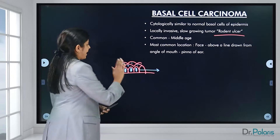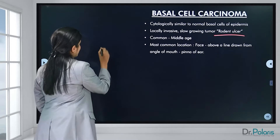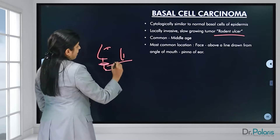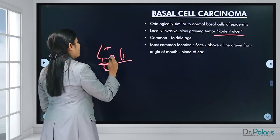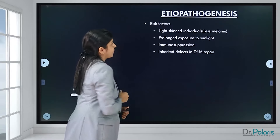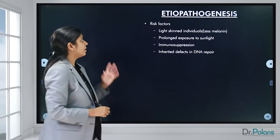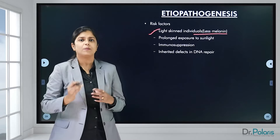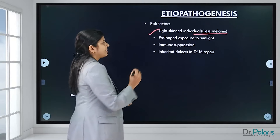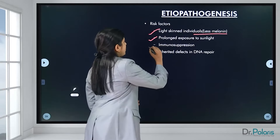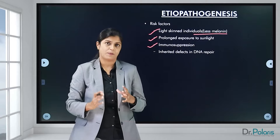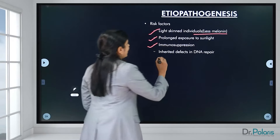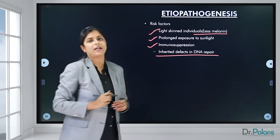Basal cell carcinoma is common in middle age. The most common location is the face — specifically above the line drawn from the angle of the mouth to the pinna. Risk factors include light-skinned individuals with less melanin production, prolonged exposure to sunlight, immunosuppression from chemotherapy, organ transplantation, or radiation therapy, and defects in DNA repair genes.